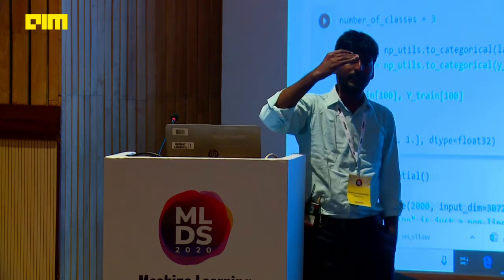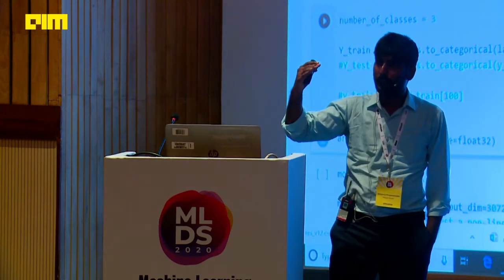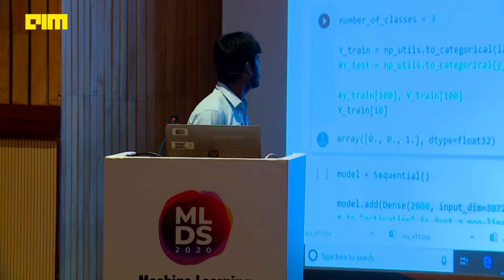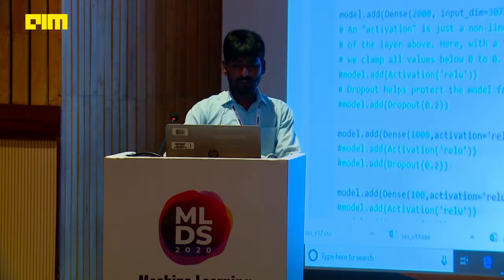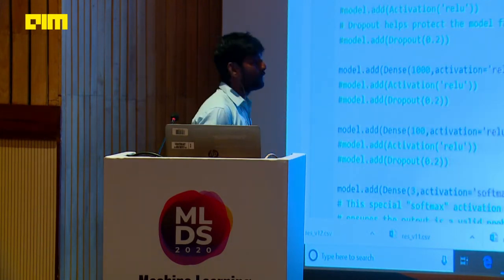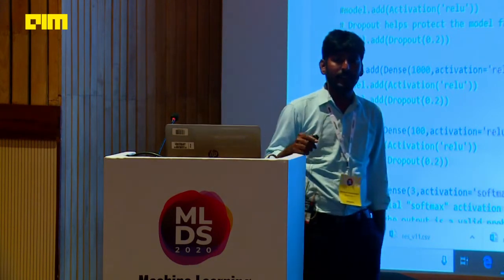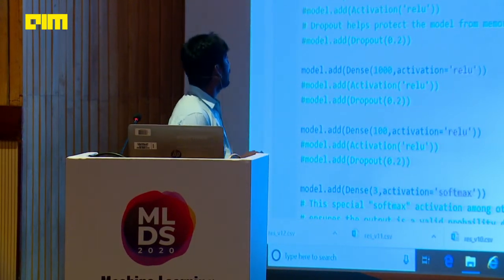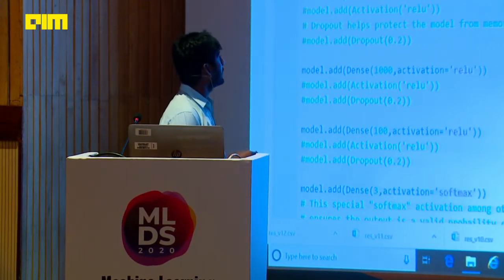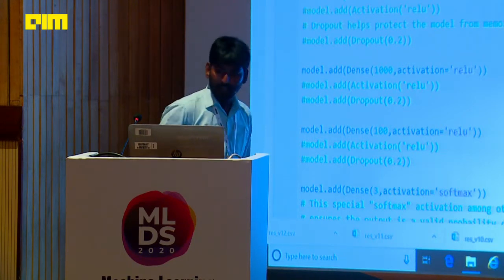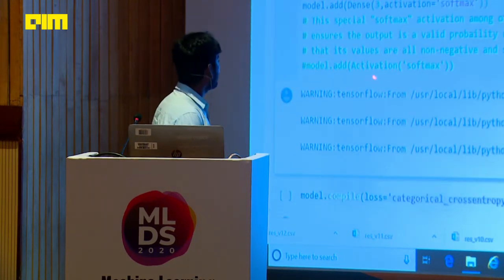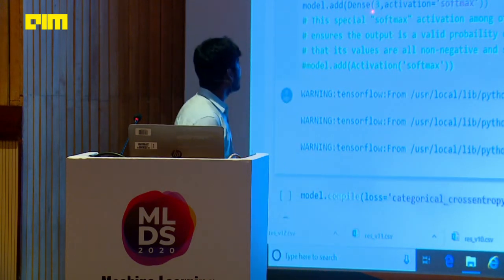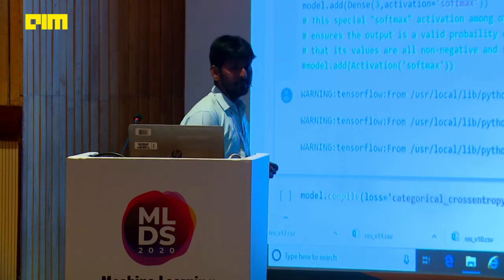If the number of classes is 3, for each class you need a 3-bit representation. If the number of classes is n, you need an n-bit representation to represent each class label. Again, I am constructing a neural network architecture — not a CNN, but a plain neural network with fully connected layers alone. The first hidden layer has 2,000 neurons, input dimension is 3,072. For the output layer, the number of neurons will be 3 since it is a 3-class multi-classification problem, and the activation function is softmax.